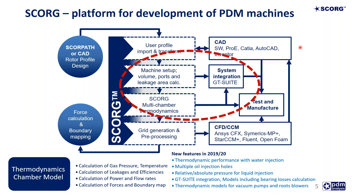Today we are going to talk about setting up the machine and using the lower order models, highlighted in the red circle on screen. These are used for calculation of gas pressures, temperatures, leakages, efficiencies, powers and flow rates, as well as forces and boundary maps of these machines.